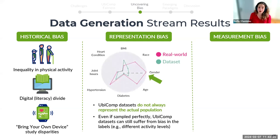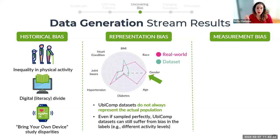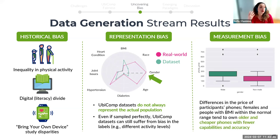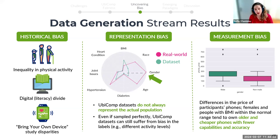In terms of measurement bias, we noticed statistically significant differences between devices used by different demographics. For example, females tended to own older and cheaper phones in the My Heart Counts dataset with fewer capabilities and accuracy, possibly affecting model accuracy in downstream tasks in our benchmark. In terms of aggregation and learning biases, we found that aware models — those including protected attributes in their feature set — propagate or even amplify biases existing in the data. However, unaware models — those excluding demographics from the feature set — are also not foolproof against data bias.